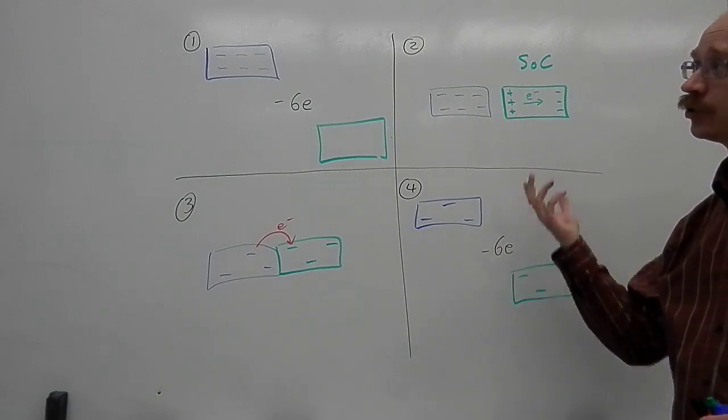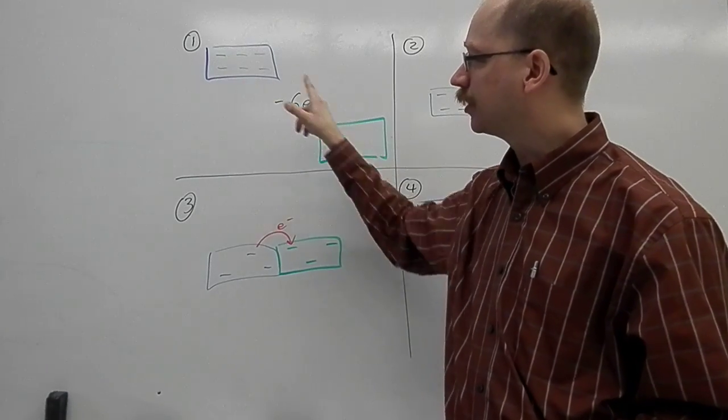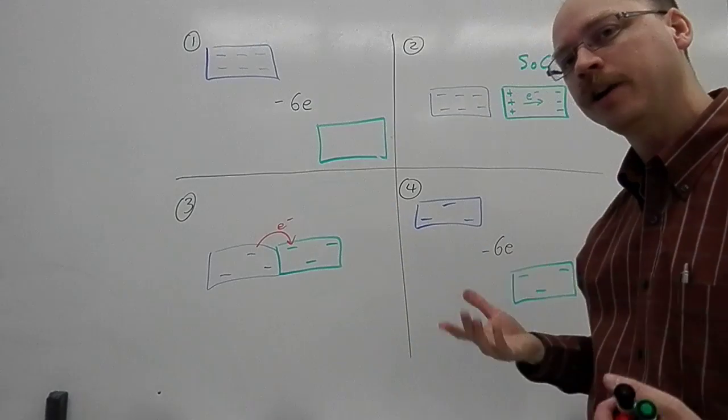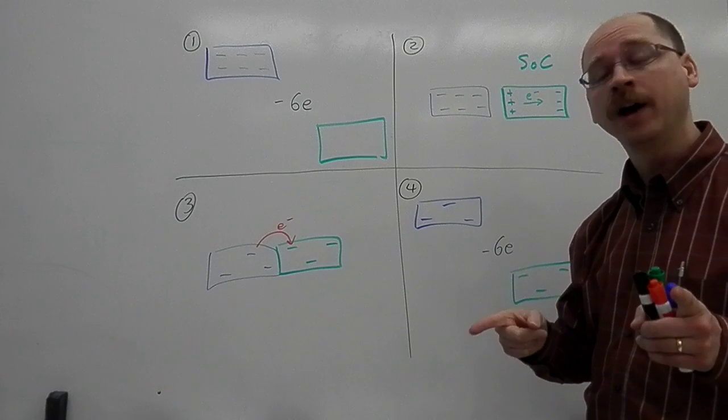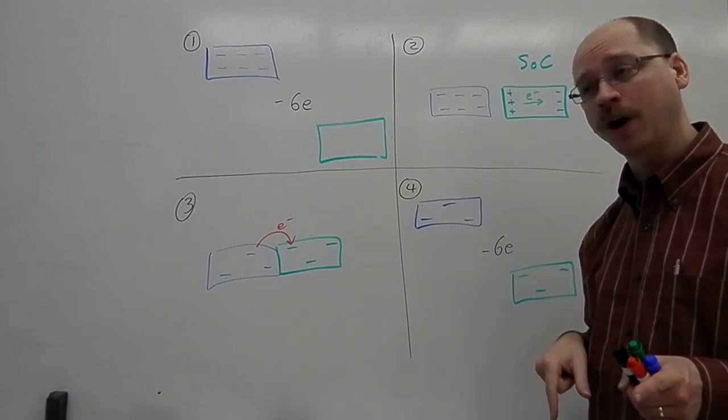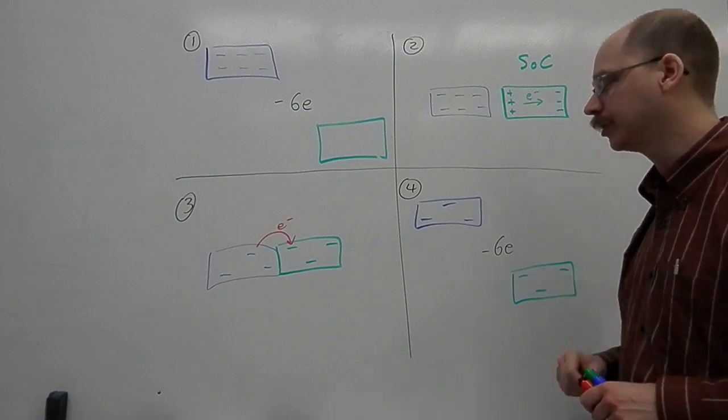One thing you might want to consider is trying to draw a diagram like this for yourself. Start with this object positive and this one neutral, and try to reason out how the charges move around. Remember, positive charges don't move. But negative charges can move around so that it kind of looks like the positives are moving. It's only electrons that ever do the moving.